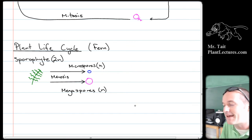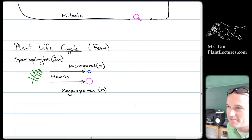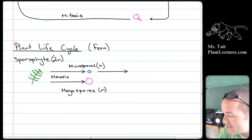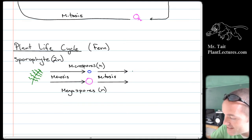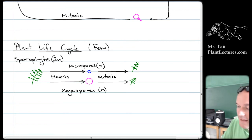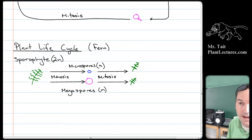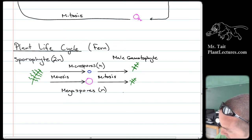Based on the animal life cycle diagram, you might expect these spores to go through fertilization — but that's not what happens. Instead, these spores go through mitosis and make whole plants called gametophytes. In the case of ferns, they look slightly similar to the sporophyte. These are whole plants in themselves — a male gametophyte and a female gametophyte.